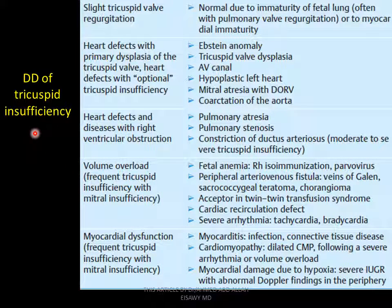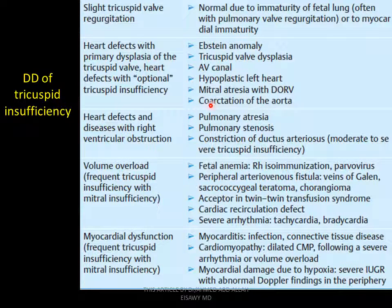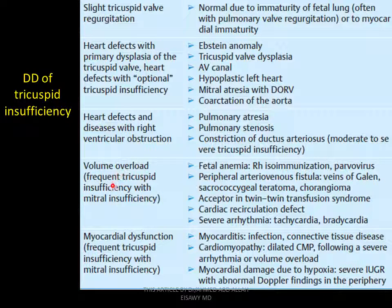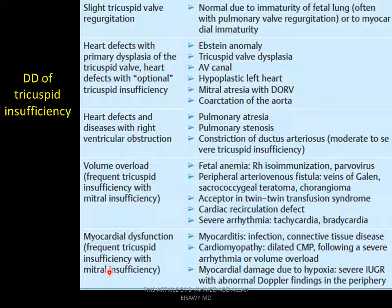Differential diagnosis of tricuspid insufficiency: slight tricuspid valve regurgitation; heart defect with primary dysplasia of tricuspid valve; heart defect with optional tricuspid insufficiency — like Ebstein anomaly, tricuspid valve dysplasia, AV canal, hypoplastic left heart, mitral atresia with DORV, coarctation of the aorta. Heart defects with right ventricular obstruction: pulmonary atresia, pulmonary stenosis, constriction of ductus arteriosus. Volume overload: frequent tricuspid insufficiency with mitral insufficiency like fetal anemia, peripheral AV fistula, twin-to-twin transfusion, cardiac tachycardia, bradycardia. Myocardial dysfunction: frequent tricuspid insufficiency with mitral insufficiency — myocardial infarction, cardiomyopathy, myocardial damage.